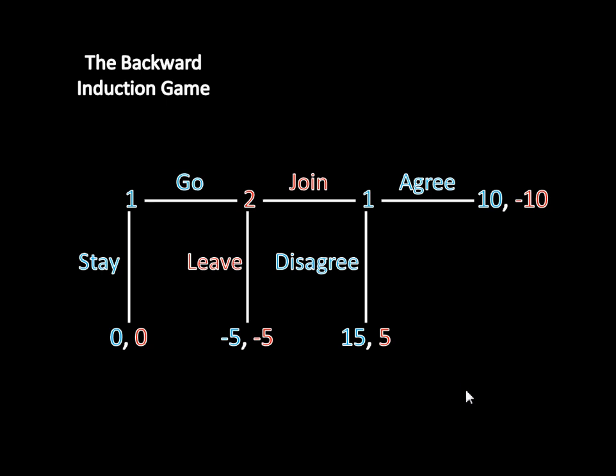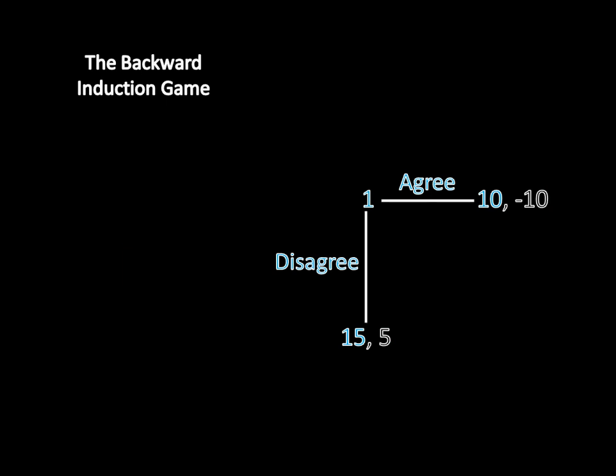With backward induction, what we're going to be doing is looking forward to the end of the game and working our way backward. Rather than trying to explain it, I think it would be best if we went over an example here, and you can see for yourself how it works in practice. So what we want to do is start at the last sub game of the game, and the last sub game of this is just going to be right here, when player one either agrees or disagrees.